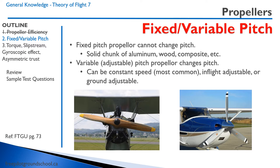You can readily identify adjustable pitch propellers by looking at the root of the propeller — it is perfectly round because it has to turn and twist inside the propeller hub. Most light aircraft you'll fly, like the Cessna 172 or Cessna 150, have fixed pitch propellers. Once you get into a Cessna 182 and larger, you'll have adjustable pitch, constant speed propellers.